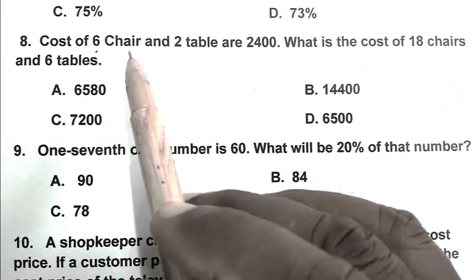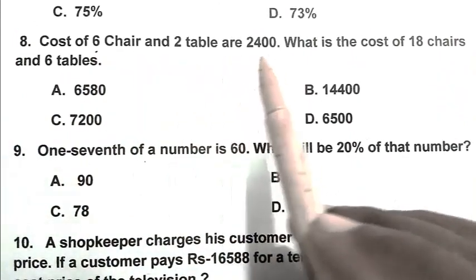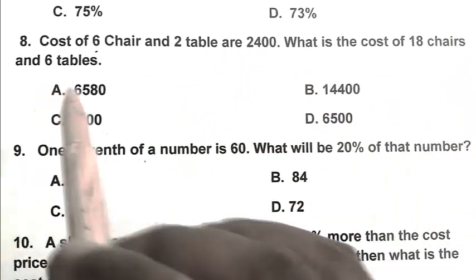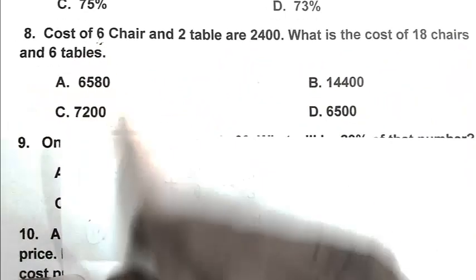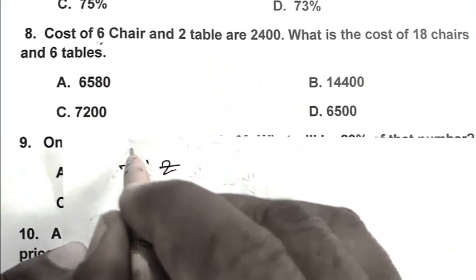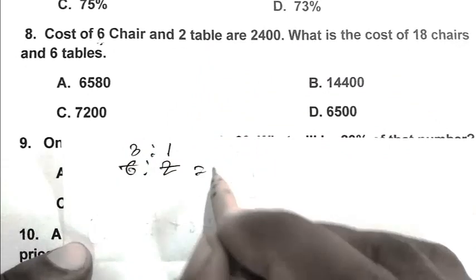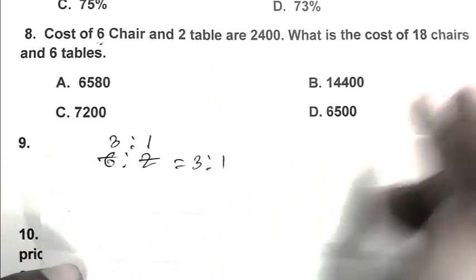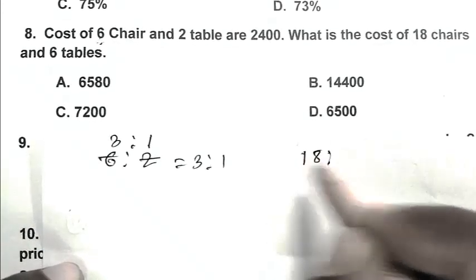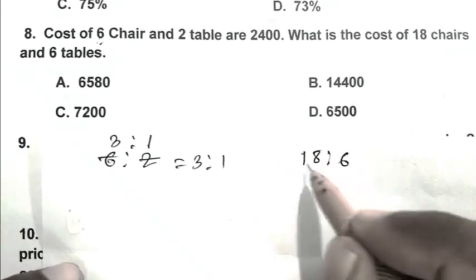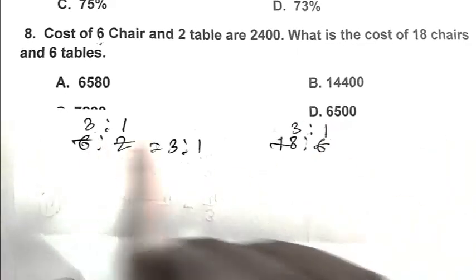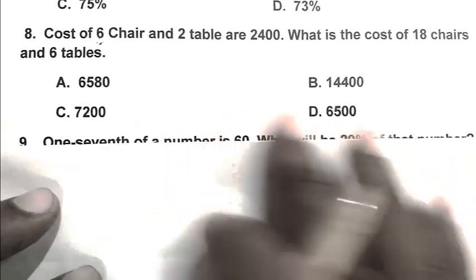Question number 8: Cost of 6 chairs and 2 tables is 2,400. What is the cost of 18 chairs and 6 tables? The ratio of chairs to tables is 3:1 in the first case and 18:6 is also 3:1. Since the ratio is same, we can ignore the table cost.